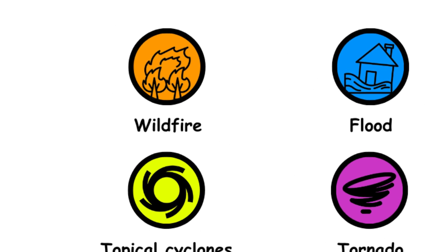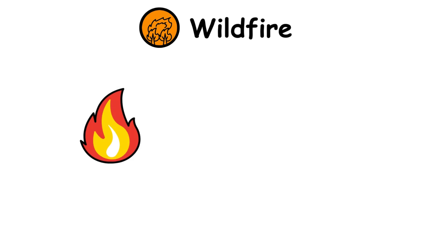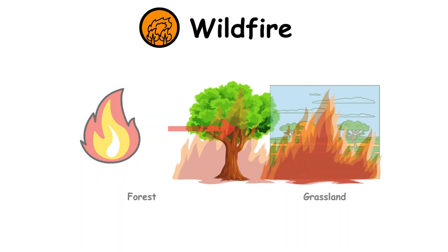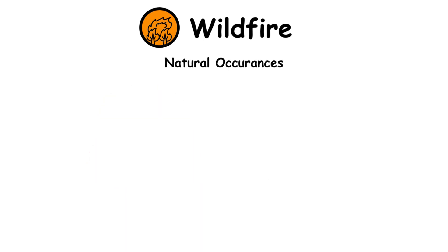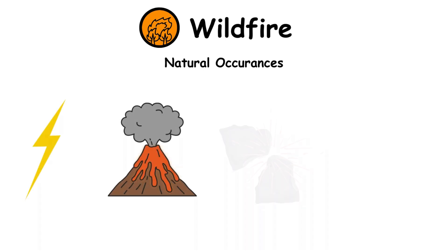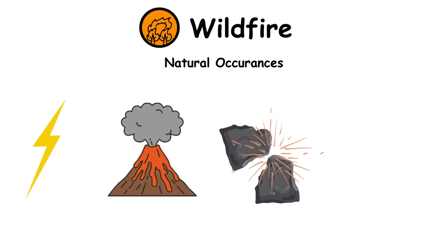Wildfires. A wildfire or a forest fire is an unplanned or unpredictable fire that burns down natural vegetation, such as a forest or a grassland. Natural occurrences that can ignite wildfires without the involvement of humans include lightning, volcanic eruptions, sparks from rockfalls, and spontaneous combustions.